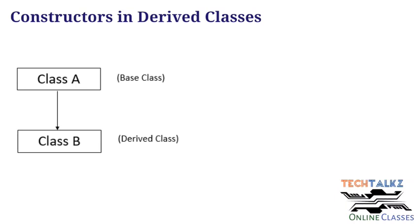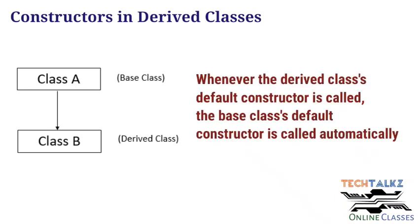The base class default constructor is considered. When one object is created, the default constructor is working. In this case, both the base class and derived class constructors are involved. When the derived class is created, the base class constructor is executed first. The order of execution is: first the base class constructor, then the derived class constructor.